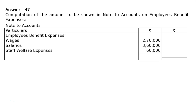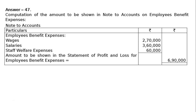Think about printing and stationery and business promotion. Printing and stationery is office expenses and business promotion is selling expenses. Hence they will not be included. It will be shown in the final column as amount to be shown in the statement of profit and loss for employee benefit expenses.